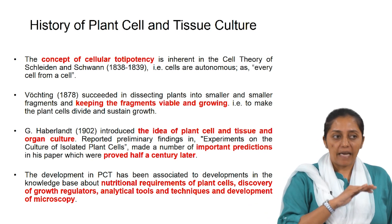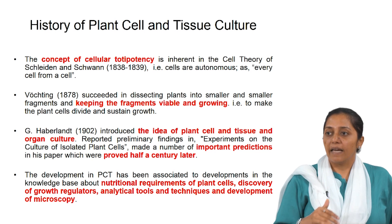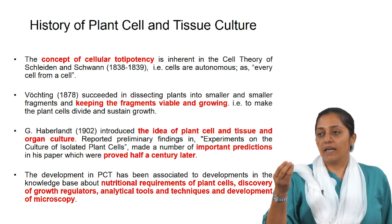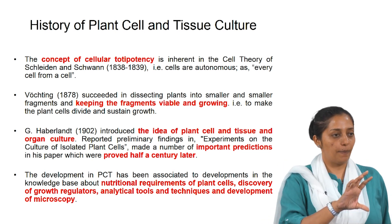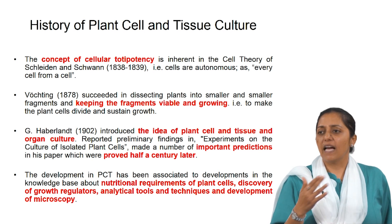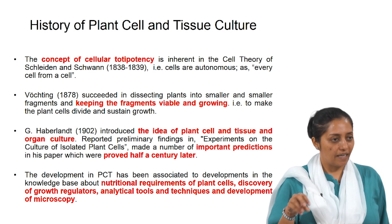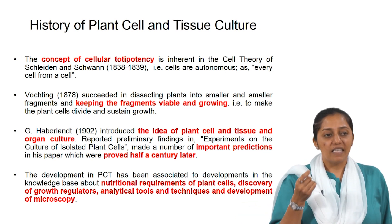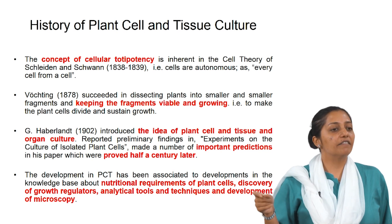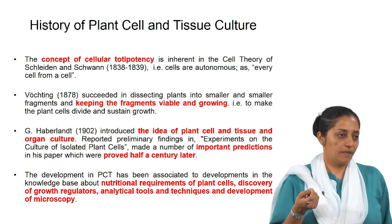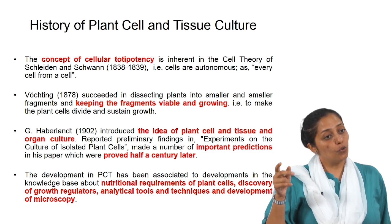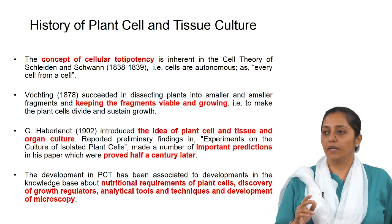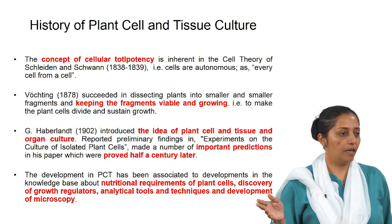Then callus induction emerged, and somatic embryogenesis also came to light through a simple experiment where carrot discs were put in suspension. Because of agitation, some single cells dispersed into the medium. Due to the nutrient composition in the liquid medium, some of these single cells rapidly divided and formed embryoid-like structures with both shoot and root primordia, later giving rise to an entire plant in solid medium — that is how regeneration discoveries came to light.